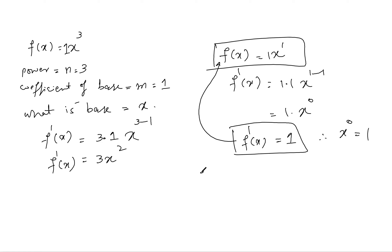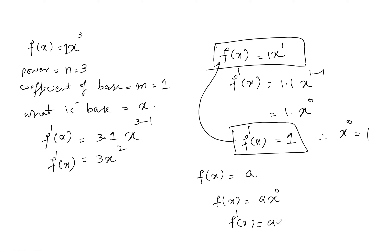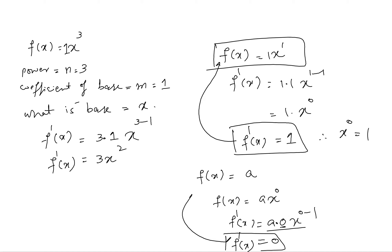Now, what is the derivative of a constant? Take any constant a. We can write it as a·x^0, since x^0 = 1. Applying the power rule: a times 0 gives 0, multiplied by x^(0-1). Since we multiply by 0, the result is 0. So the derivative of any constant is 0.